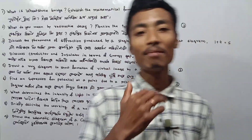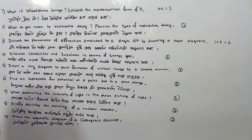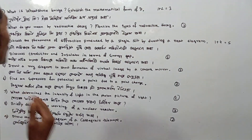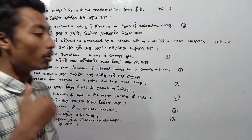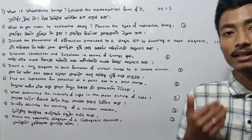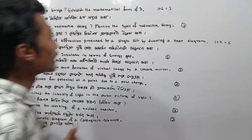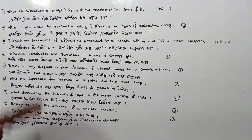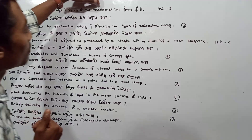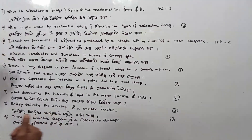Now let us discuss the questions. First question: What is Wheatstone bridge? Wheatstone bridge is a frequently expected question. This topic is important. Establish the mathematical form of Kirchhoff's law — okay.